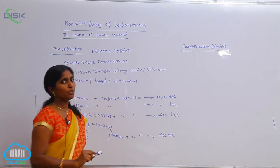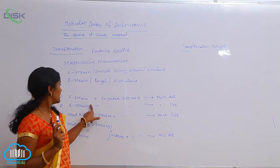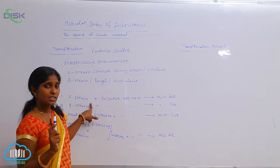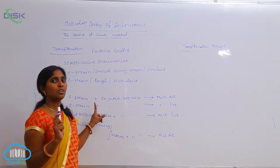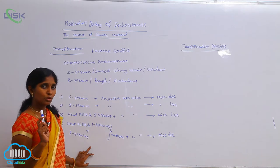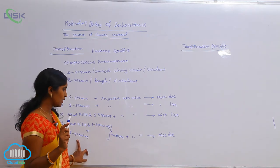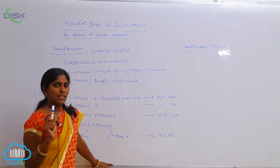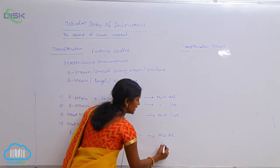Four different results were observed across the four stages. S strains are virulent — they show pathogenicity and cause disease, leading to the death of the mice. R strains are avirulent and do not cause disease, so the mice remain healthy. However, in the fourth stage, even though only heat-killed S strains were present alongside R strains, the mice still died. From the dead mice, he collected strains and found they were of the S type.